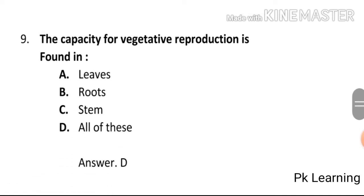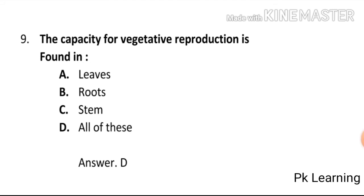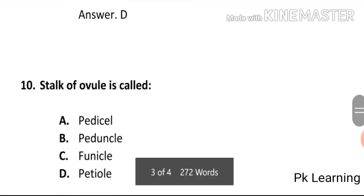The capacity for vegetative reproduction is found in: A) leaves, B) roots, C) stem, D) all of these. The answer is D, all of these. D is the correct option.